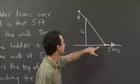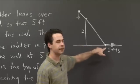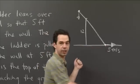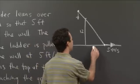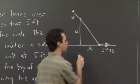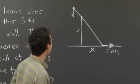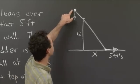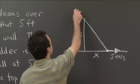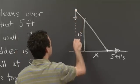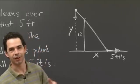The distance between the base of the wall and the base of the ladder is changing because the ladder is being pulled away from the wall. Let's call that x — it's a horizontal distance. And the height of the top of the ladder is changing, so let's call it y — that's what we're interested in.